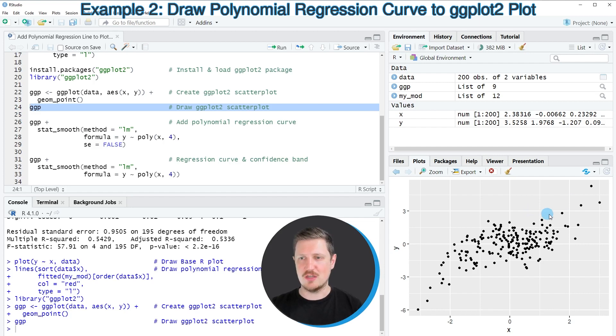And then you can see that we have created the same scatterplot as in the previous example. However, this time the scatterplot is shown in this typical ggplot2 style that you might already know from previous videos.